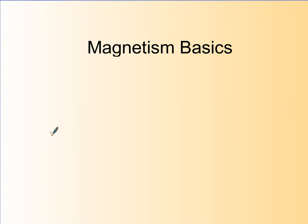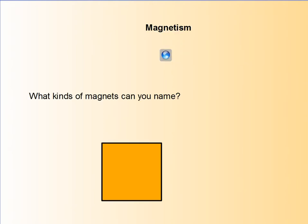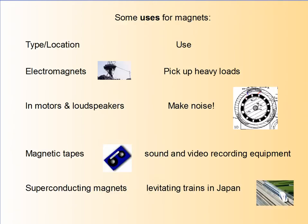Now let's talk about some basics of magnetism. Magnetism is a lot of fun and it's actually the basis for a lot of magic tricks. Think of some kinds of magnets that you know about: refrigerator magnets, bar magnets, horseshoe magnets. These are all magnets that follow the same basic principles that we're going to discuss in this unit.